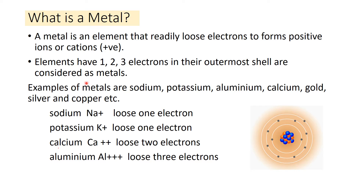Elements with one electron in the outermost shell will lose one electron, elements with two electrons will lose two electrons and become doubly positive, and elements with three electrons will lose three electrons to become triply positive. Examples of metals are sodium, potassium, aluminium, calcium, gold, silver, and copper.